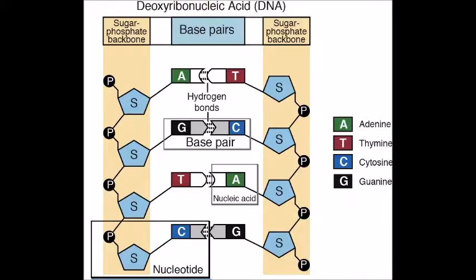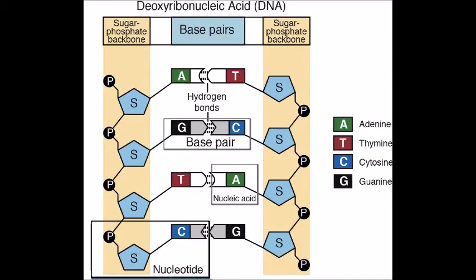There are four types: adenine, cytosine, guanine, and thymine. In RNA, thymine is replaced with uracil.